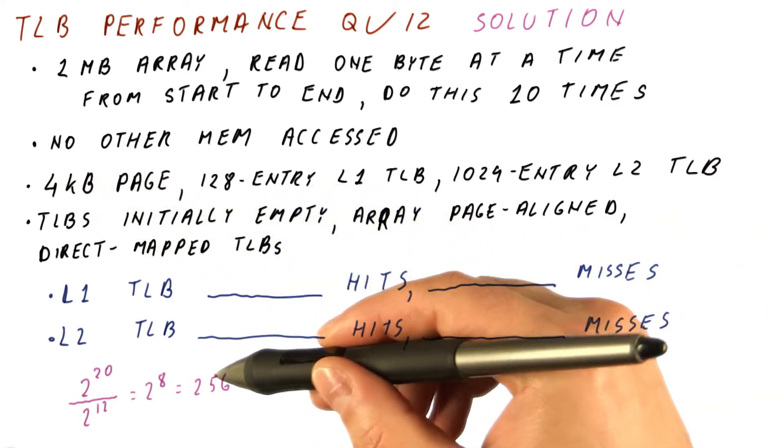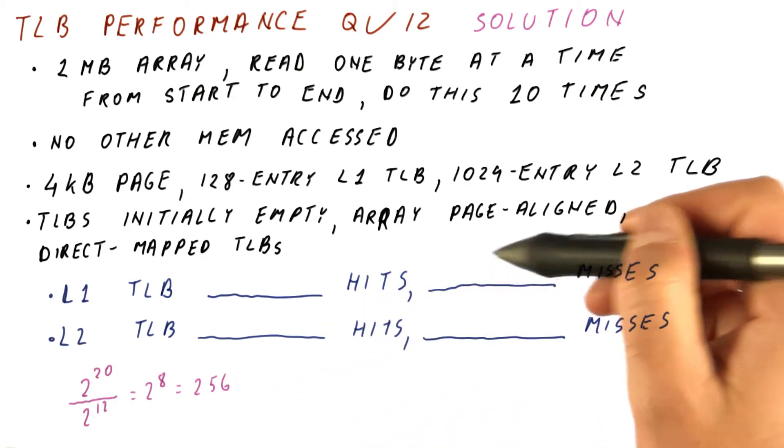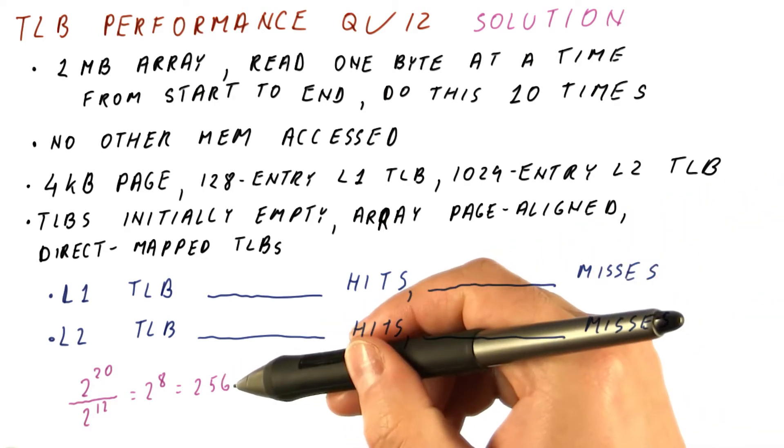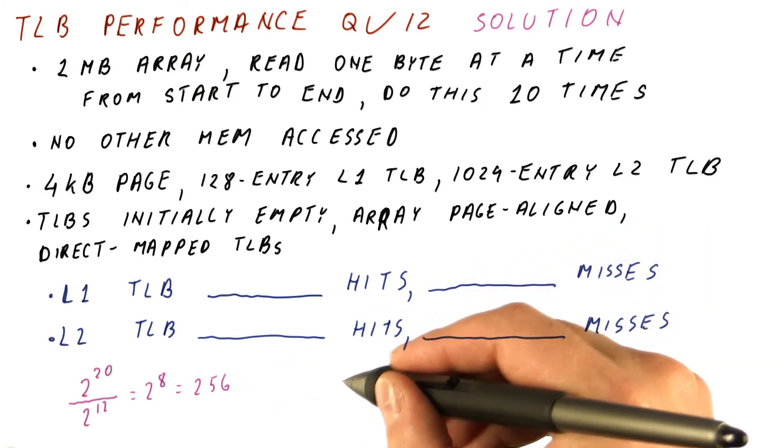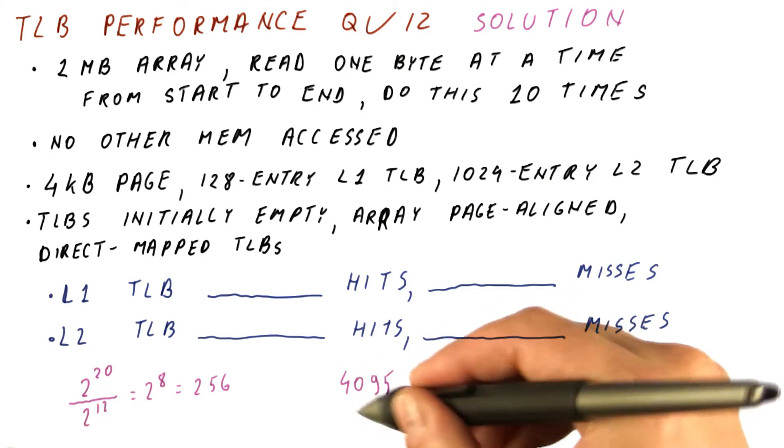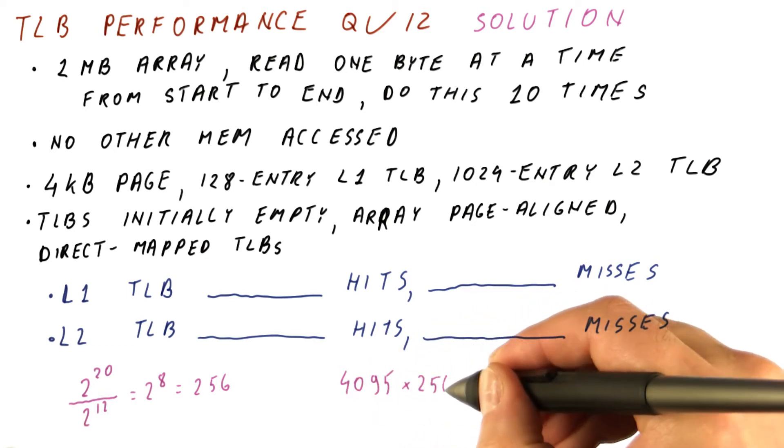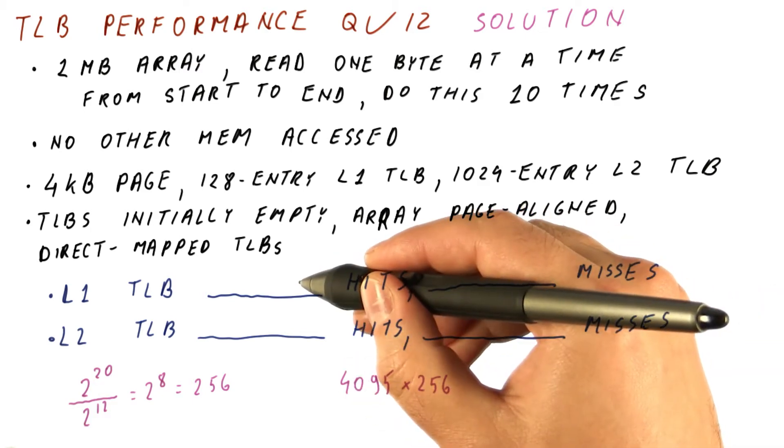In the first sweep, we will have 256 L1 TLB misses, because that's how many pages we accessed. And we will have 4095, this is one less than four kilobytes, times 256 TLB hits at level one.